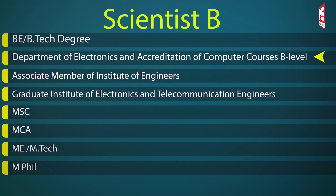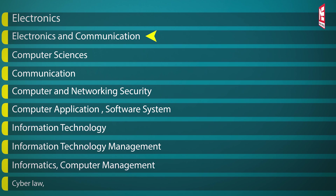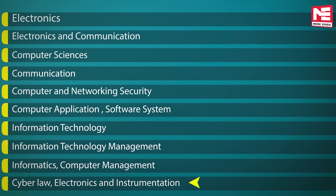Next dekhte hain educational qualifications. Scientist B post mein apply karne ke liye aap ke paas B.E./B.Tech degree, or Department of Electronics accreditation B Level, or Associate Member of Institute of Engineers, or Graduate of Institute of Electronics and Telecommunication Engineers, or M.Sc., MCA, M.E., M.Tech, or M.Phil degree in Electronics, Electronics & Communication, Computer & Networking Security, Computer Application, Software Systems, Information Technology, IT Management, Informatics, Computer Management, Cyber Law, or Electronics & Instrumentation — ya in ke combination mein — honi chahiye.